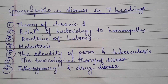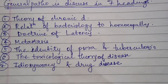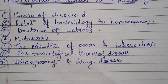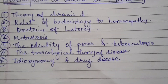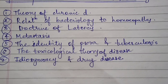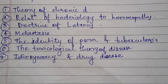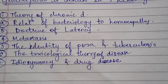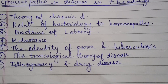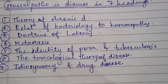The general pathology is discussed under seven headings: first, the theory of chronic disease; second, relation of bacteriology to homeopathy; third, doctrine of latency; fourth, metastasis; fifth, the identity of Psora and tuberculosis; sixth, the toxicological theory of disease; and seventh, idiosyncrasy and drug disease. Each of these can be asked separately for five marks, so it is very necessary to understand each topic in detail.